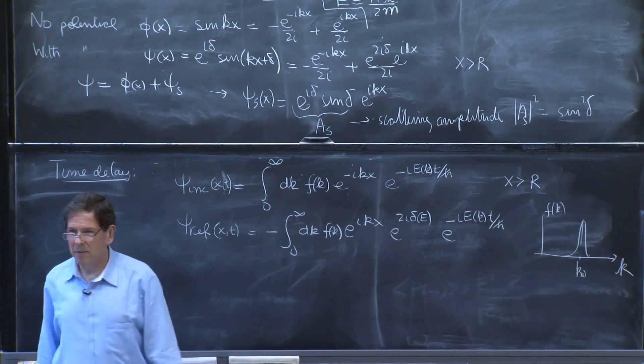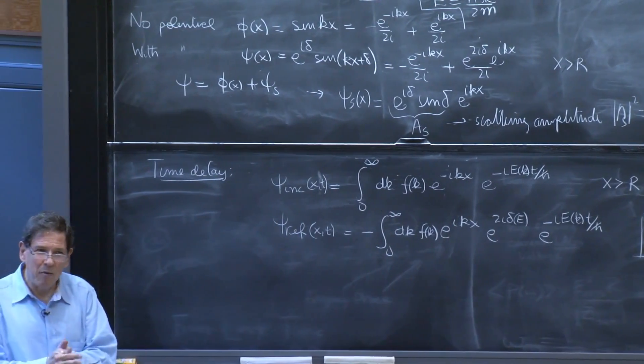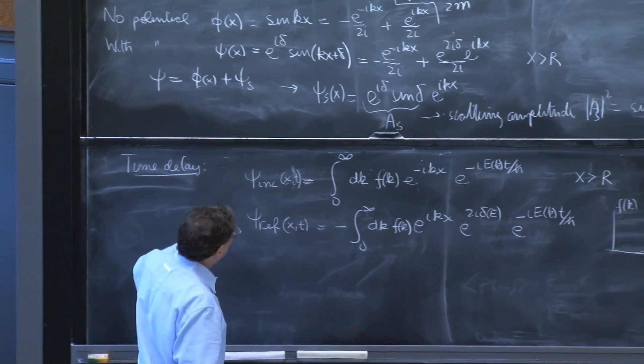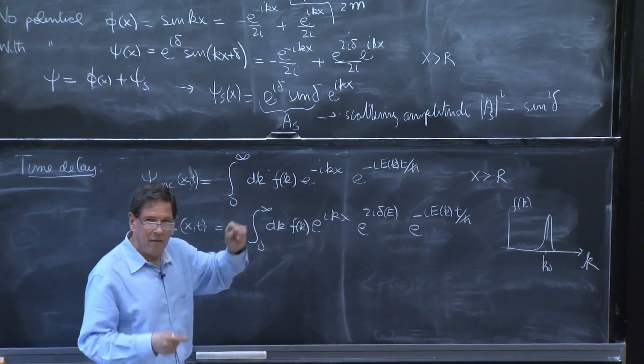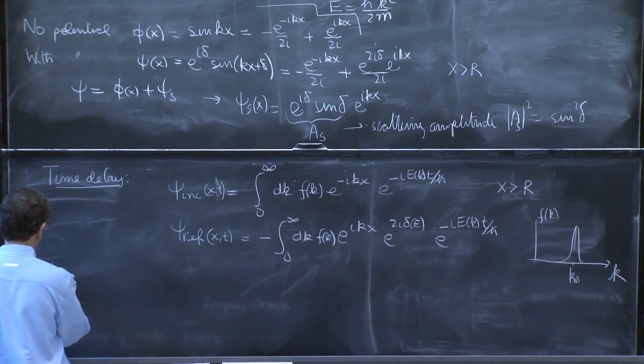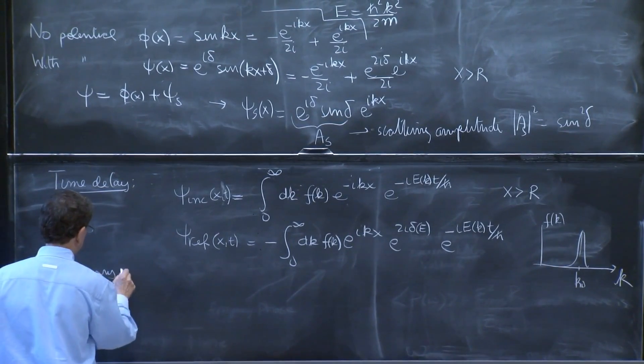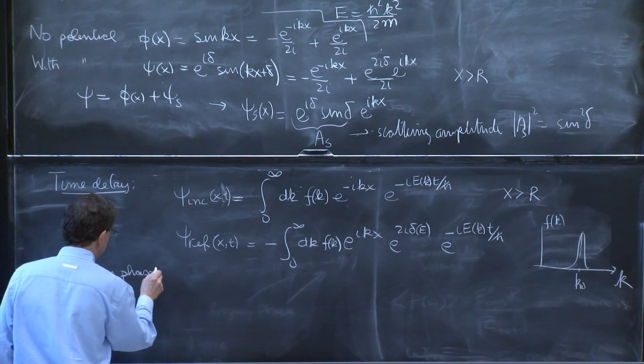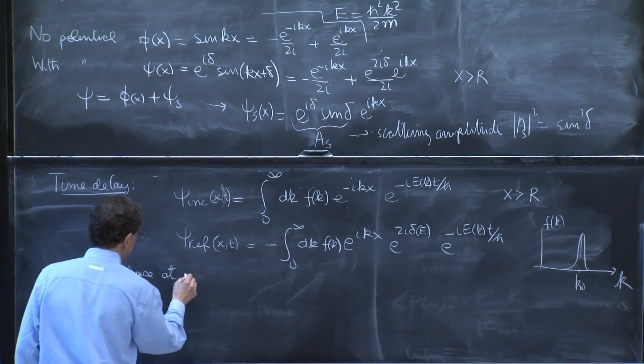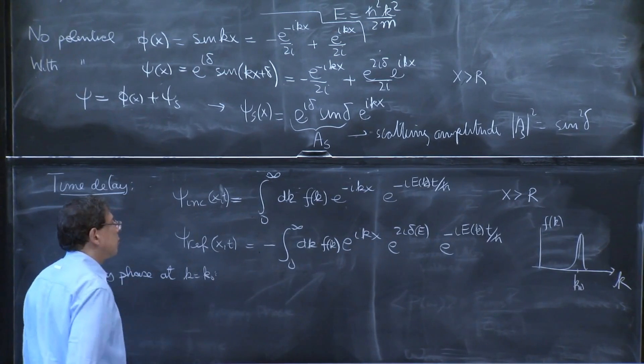Now, of course, we can do the stationary phase calculation that we've done several times to figure out how the peak of the wave packet moves. So stationary phase at k equal k0.